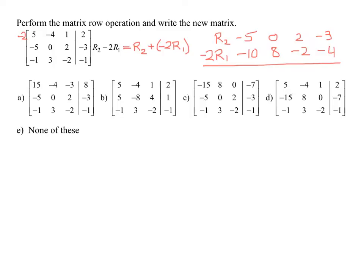So now I have negative 2 times row 1, I can just add it to my row 2. So we're going to add these two numbers. What's negative 5 and negative 10? Negative 15.